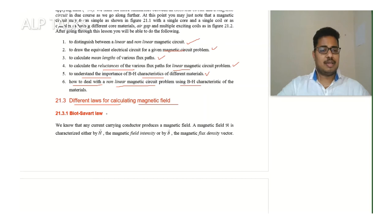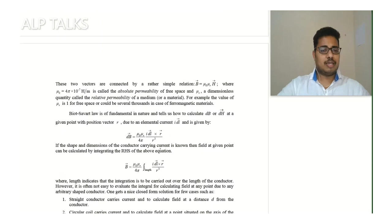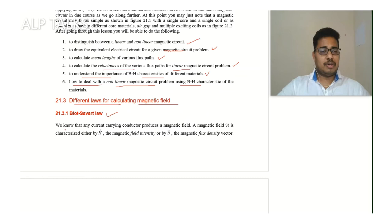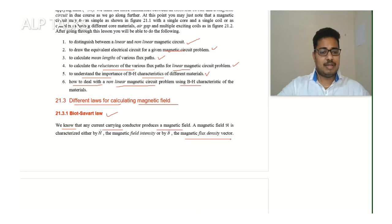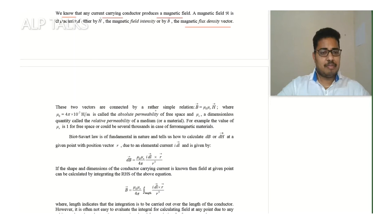There are different laws for calculating magnetic fields: Biot-Savart law and Ampere's circuit law. We know that any current-carrying conductor produces a magnetic field. A magnetic field is characterized either by H-bar — the magnetic field intensity vector — or by B-bar — the magnetic flux density vector. These are vector quantities. Whenever there is an arrow at the top, we read it as H-bar, B-bar, etc.